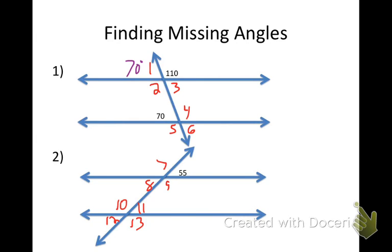What about angle two? Why do I know angle two? It's a corresponding angle — two is 110 degrees. What type of angles are those over here? Those are vertical angles, and vertical angles are always congruent, so that one has to be 110.